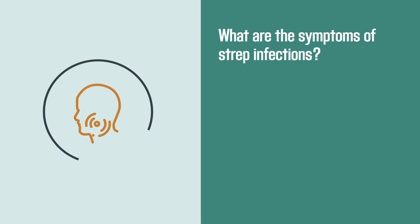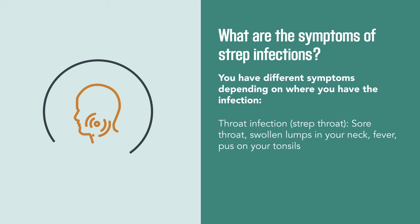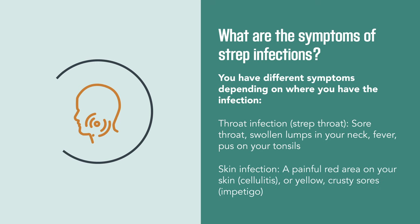What are the symptoms of strep infections? If you have a throat infection, you may have a sore throat, swollen lumps in your neck, fever, and pus on your tonsils. If you have a skin infection, you might have a painful red area on your skin or yellow crusty sores.